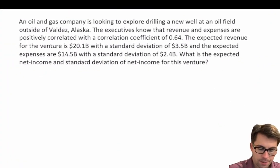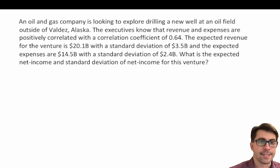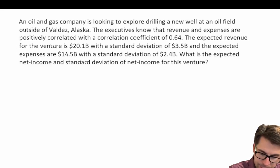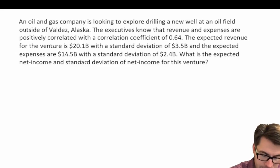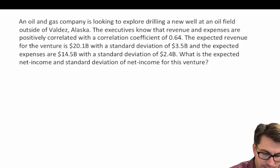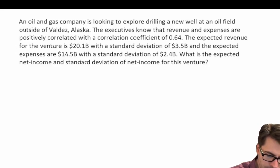An oil and gas company is looking to explore drilling a new well at an oil field outside of Valdez, Alaska. The executives know that revenue and expenses are positively correlated with a correlation coefficient of 0.64. The expected revenue for the venture is 20.1 billion dollars with a standard deviation of 3.5 billion, and the expected expenses are 14.5 billion with a standard deviation of 2.4 billion. What is the expected net income and standard deviation for this venture?